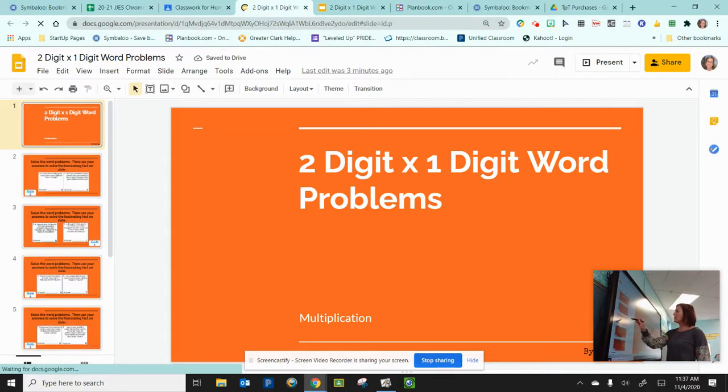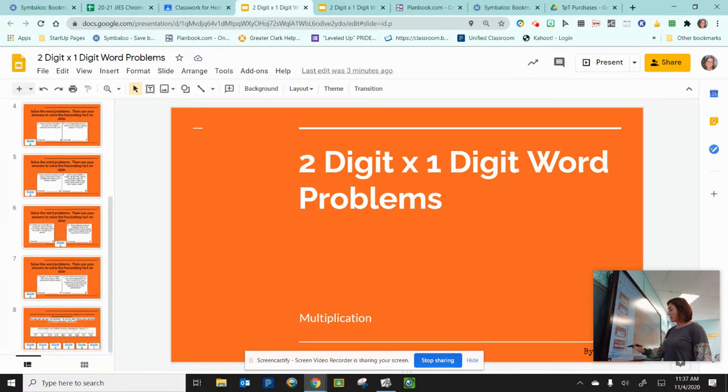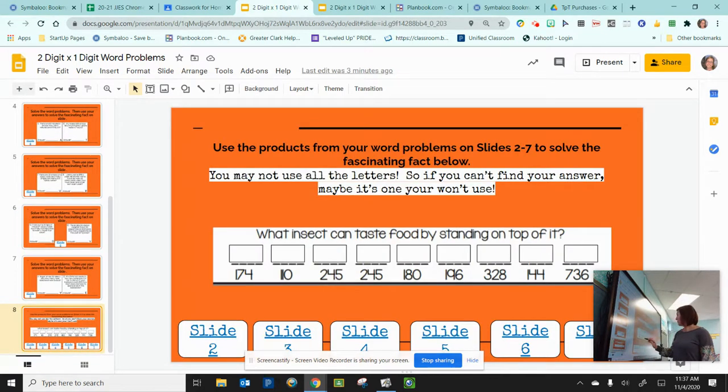So here's what we've got. There are 12 word problems for you to solve, and each of those word problems has a letter connected to it. Down on slide number 8, there's a riddle. What insect can taste food by standing on top of it? Well, my first thought is a fly, but there's way too many letters for a fly. So I'm curious to see what it is.